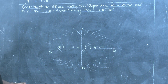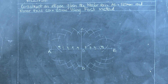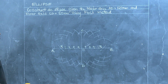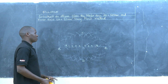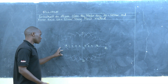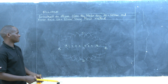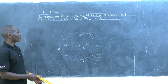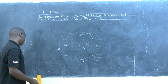Those are the points that will define our ellipse using the FOSSI method. What remains is to join the points with a smooth curve. Points A, B, and C will also form points around the required ellipse.